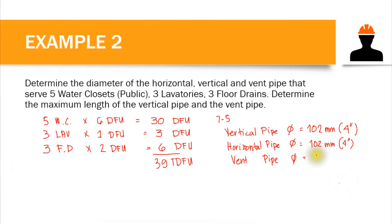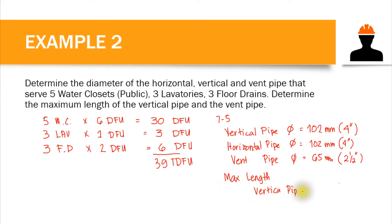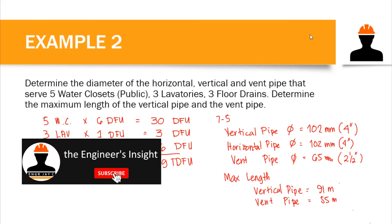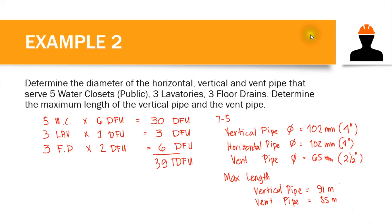To summarize example number two: the vent pipe diameter is 65 millimeters or 2 and a half inches. The maximum length of the vertical pipe is 91 meters, and the maximum length of the vent pipe is 55 meters. Those are our answers for example number two. If you have queries or questions, comment them down. Please don't forget to subscribe to my channel and hit the notification bell for more videos. Thank you for listening and God bless you.